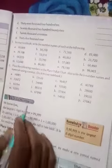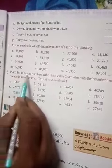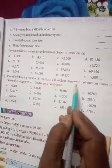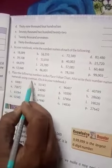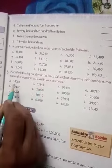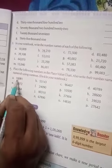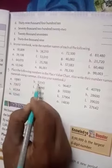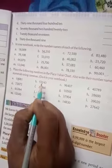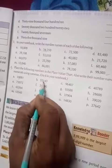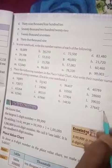Question number four: place the following numbers in the place value chart, also write their number names and numerals using commas. For a, just put a comma after ten — it was ten thousand and eighty-one. For b, just put a comma after three — fifty-three thousand one hundred and forty-three. Like this, you complete all. Thank you.